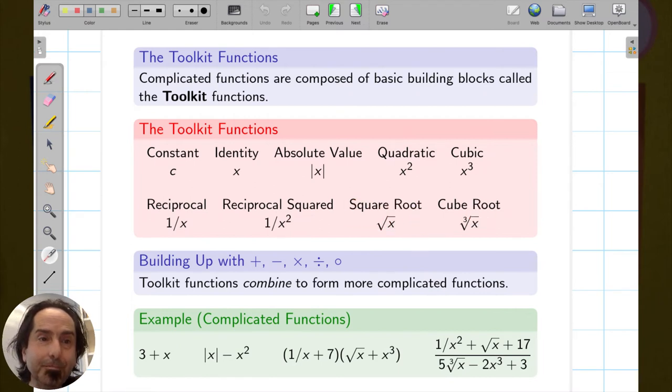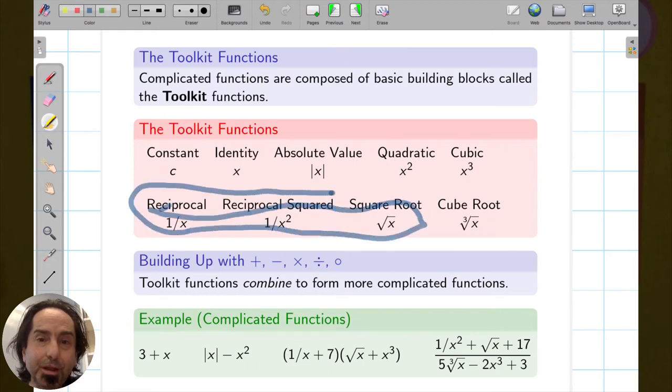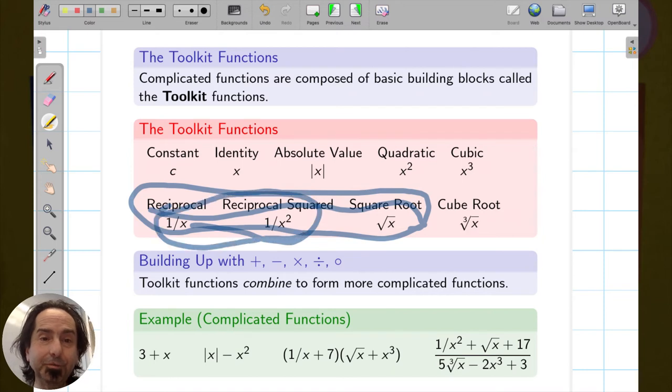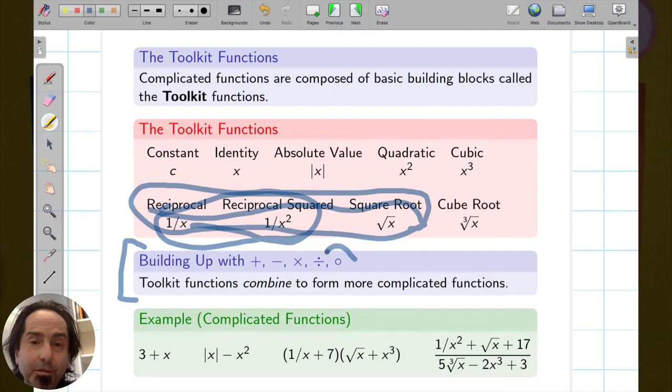Of these functions, these ones don't have domain of all real numbers. You shouldn't take a square root of a negative number, at least not in this class. And these ones you shouldn't divide by zero. But there's ways to take those toolkit functions and build up using the four arithmetic operations, adding functions, subtracting functions, multiplying functions, dividing functions. And then there's this one other that we'll see a little bit later in this segment.